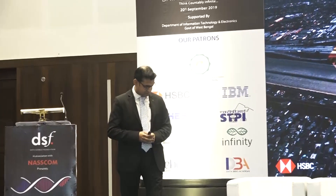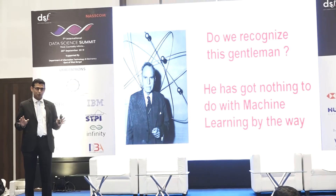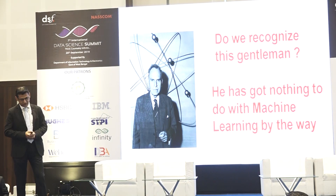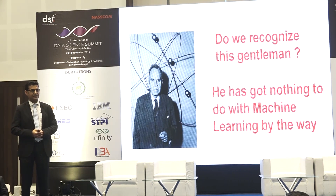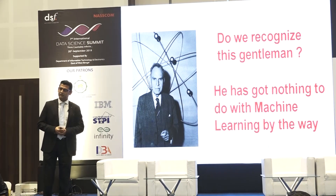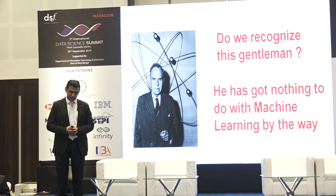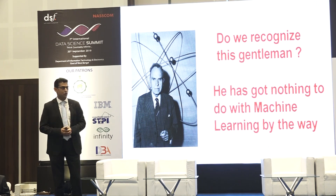The topic for today is Advent of ML and AI in the banking landscape. But I'll start with a photo. Does anybody recognize who this gentleman is? He's got nothing to do with machine learning. This is the photo of the very celebrated German scientist and chemist, Otto Hahn, who was instrumental in discovering nuclear fission. He was the first person who basically figured out that massive amounts of nuclear energy can be generated by the collision of subatomic particles.